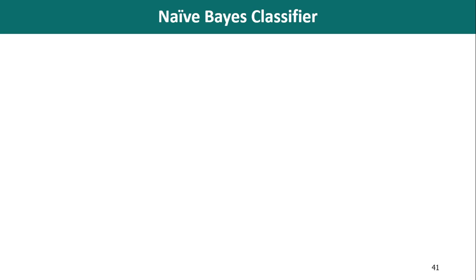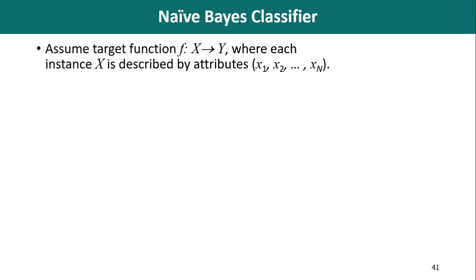Let us go through the detailed description of this classifier. Let us assume that we are having a target function f that accepts the instance x and produces the outcome y. Each instance x is described by n number of attributes or features. So every instance x is described in terms of n features x1, x2, up to xn, and it produces the output y.